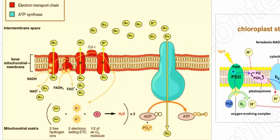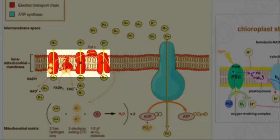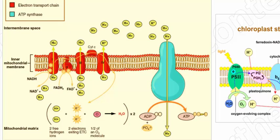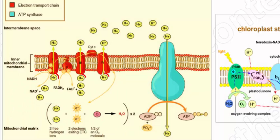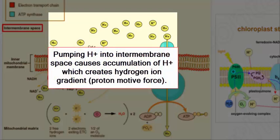Directing your attention to the figure on the left-hand side of the screen, this is a diagram of a section of an inner mitochondrial membrane. In this example, we have the electron transport chain, or components of the electron transport chain, actively using the energy that is released from redox reactions — oxidation-reduction reactions — to drive the creation of a proton gradient in the intermembrane space, the space between the inner and the outer mitochondrial membrane.